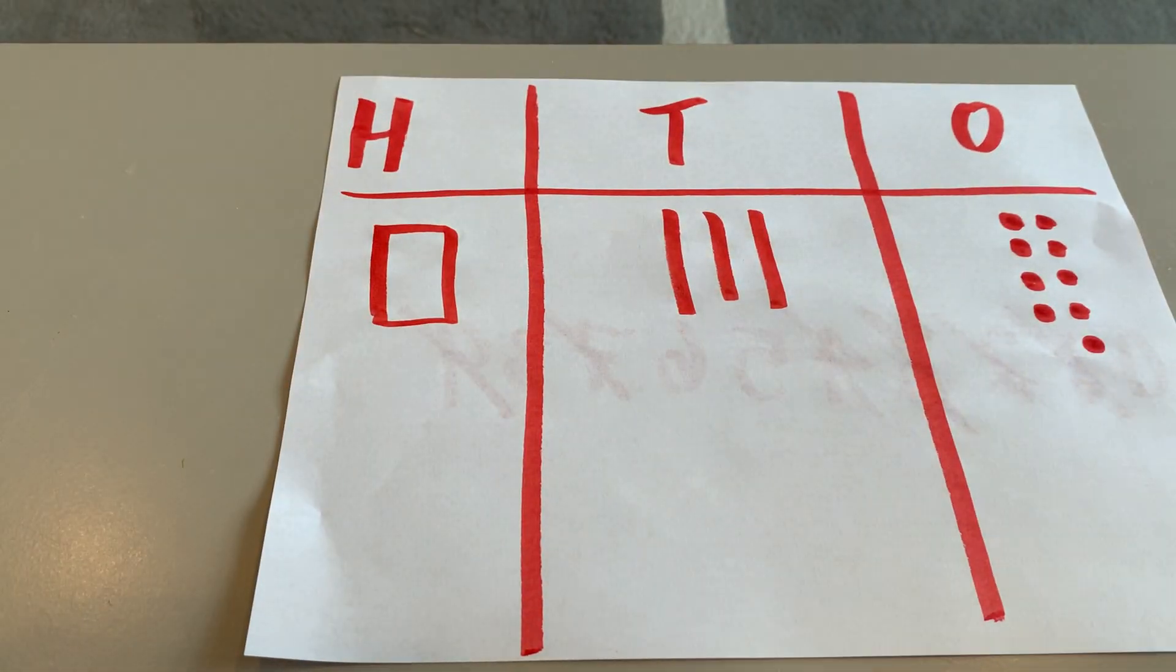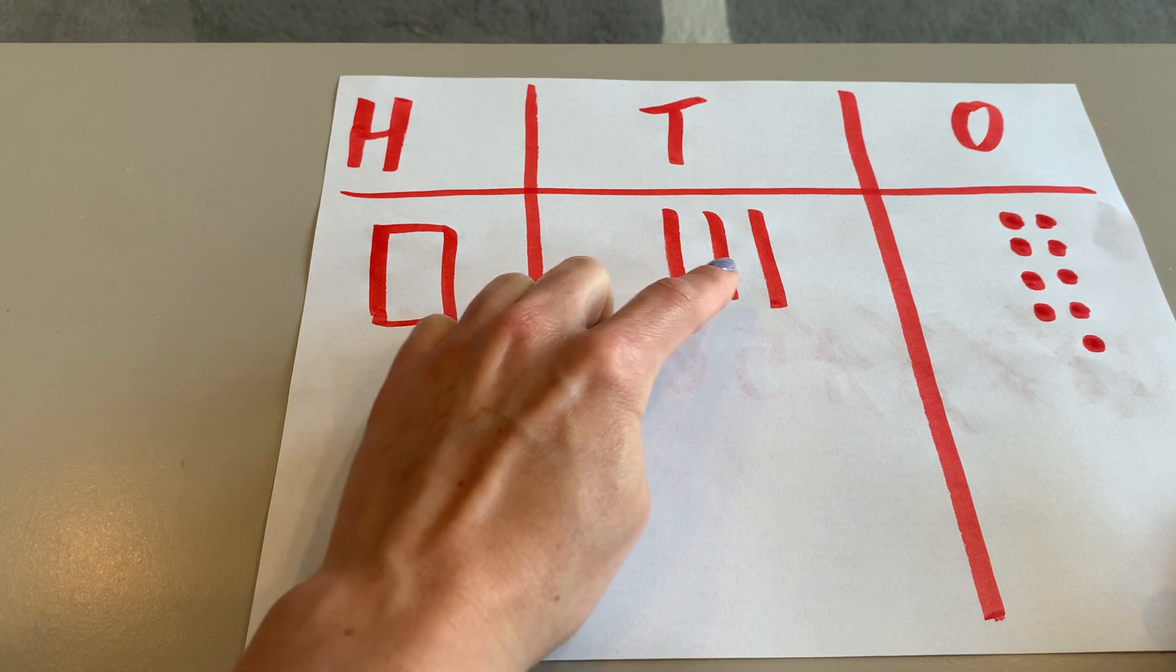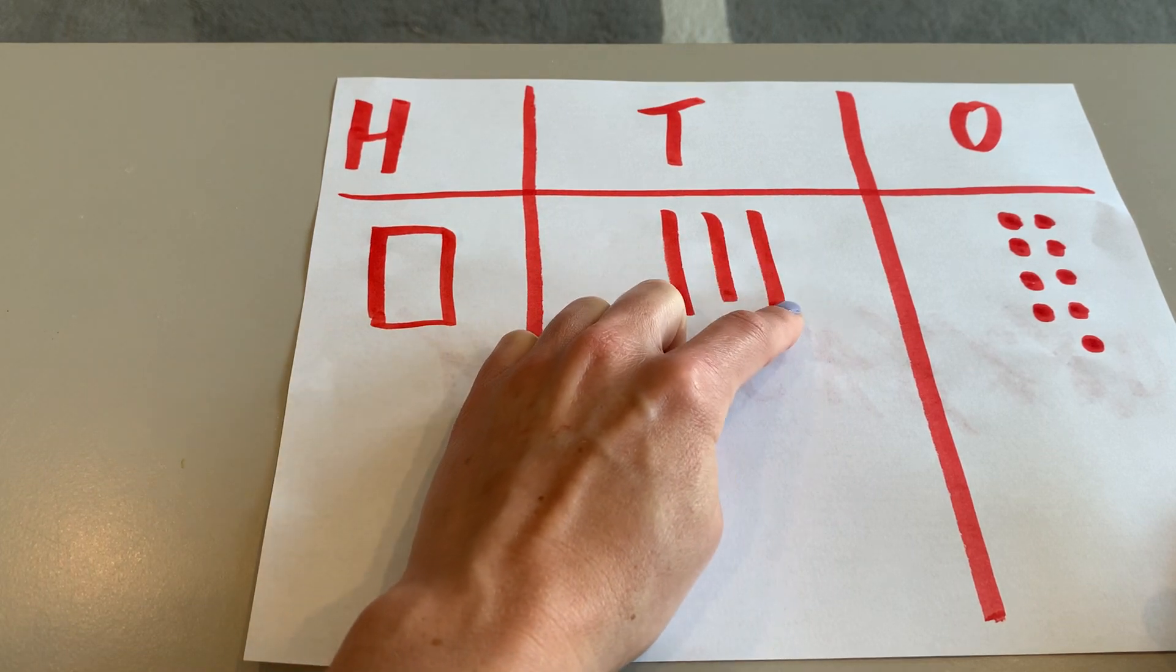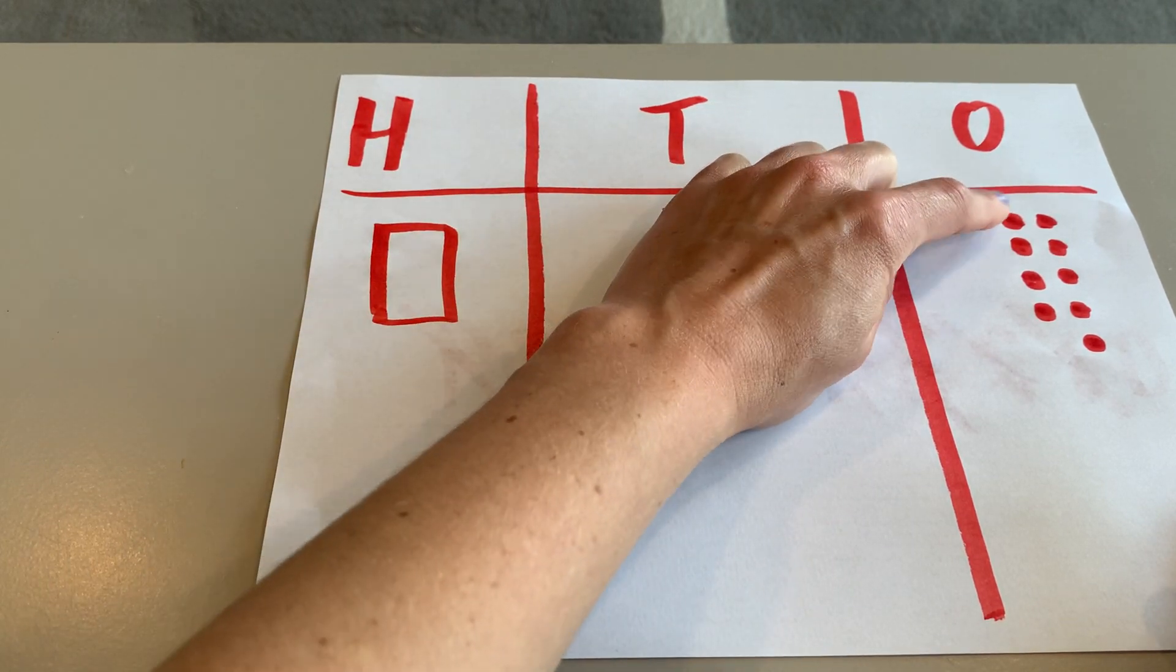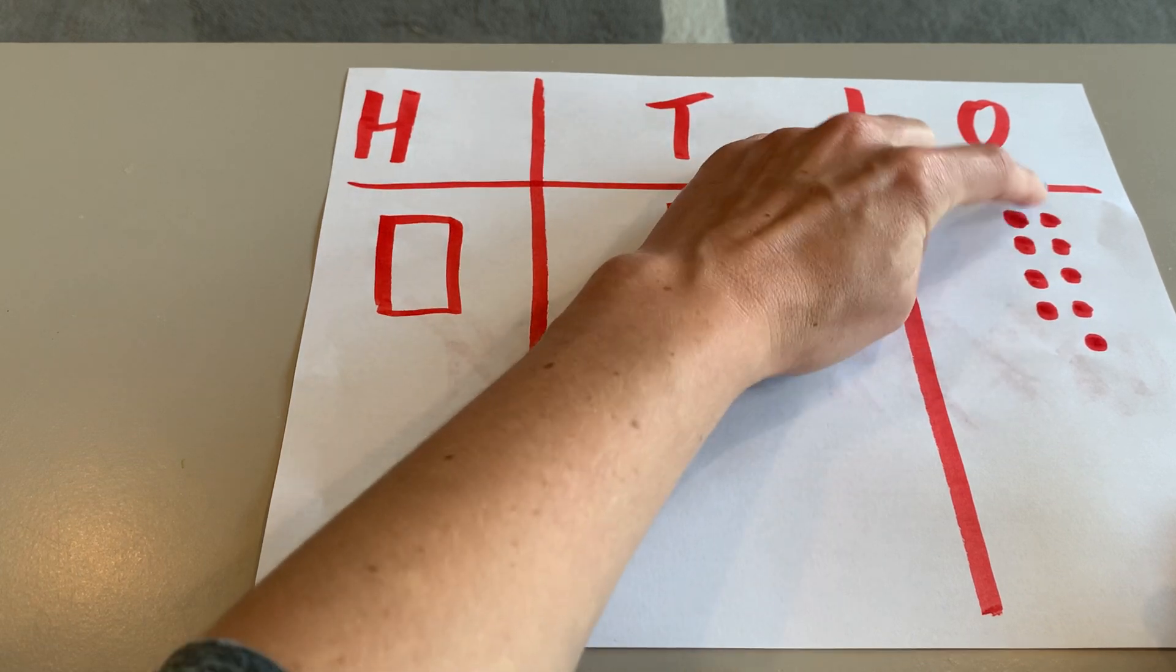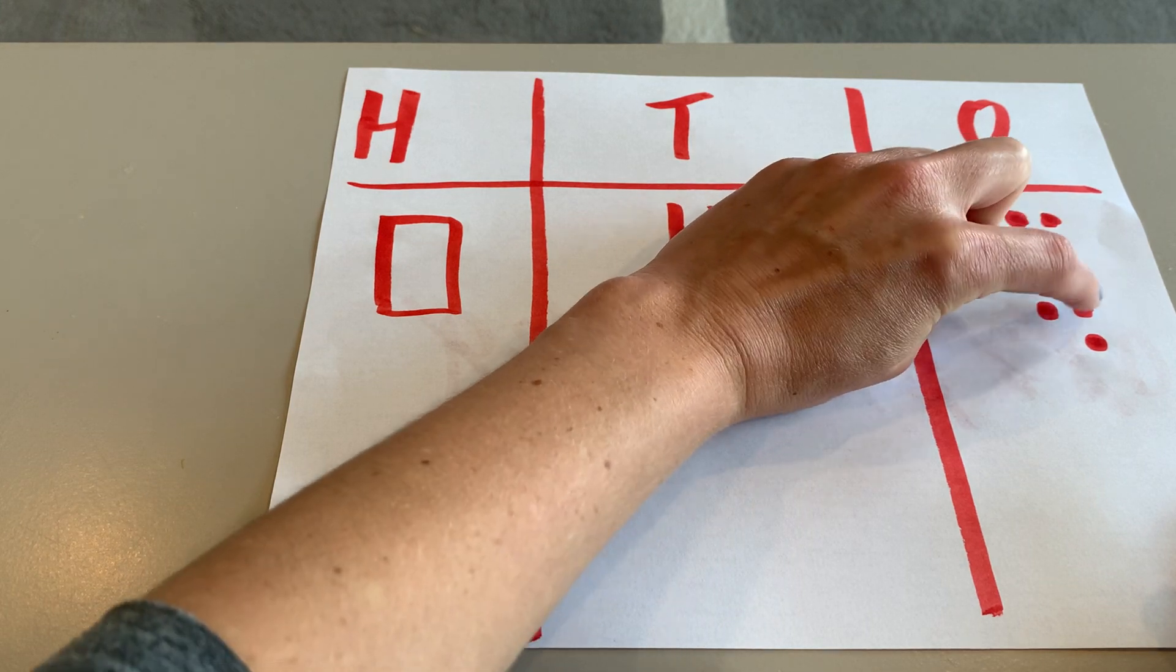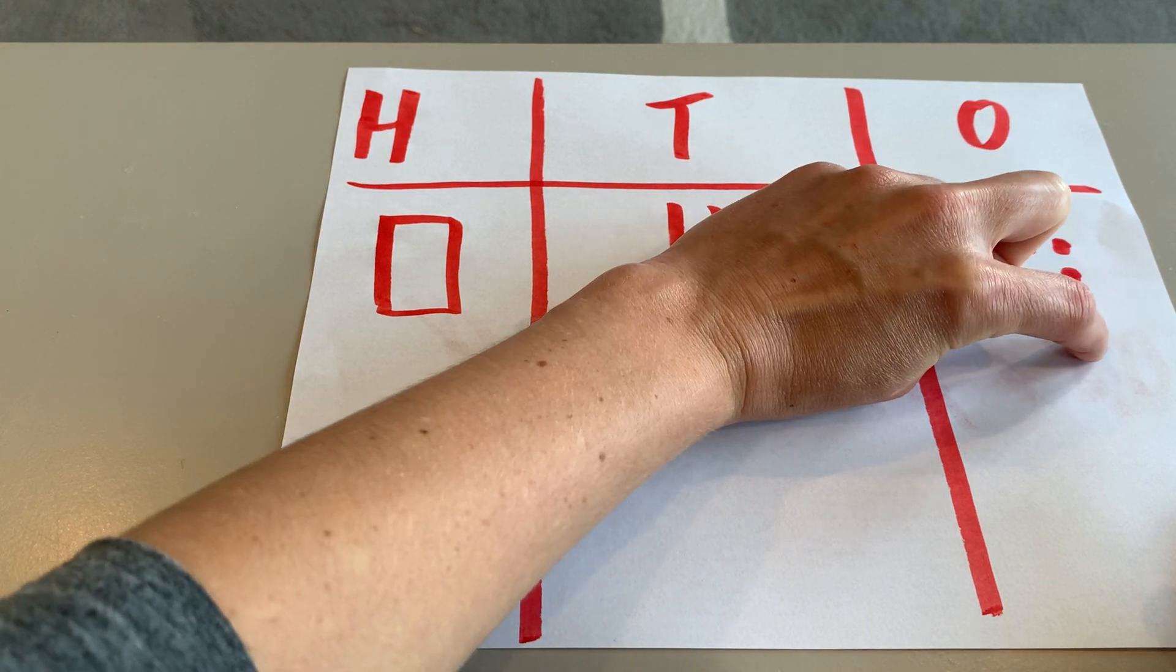Let's count our number just to make sure that we're drawing numbers correctly. We have 100, 110, 120, 130, 131, 132, 133, 134, 135, 136, 137, 138, 139.